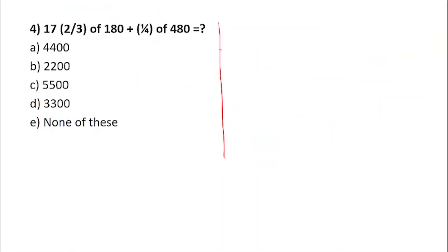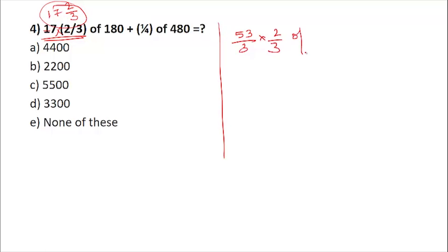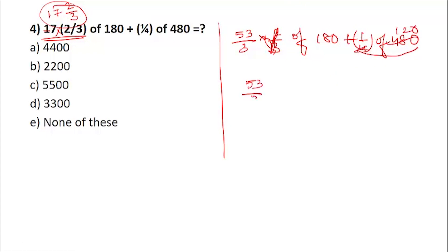Next example: 17⅔ — this is a mixed fraction, not a multiplication. So 17⅔ equals (17 × 3 + 2) / 3 = 53/3. Then 'of' 180 is present, and plus ¼ of 480. According to BODMAS, no bracket, so solve 'of' first: ¼ of 480 = 120. We now have 53/3 of 180 plus 120.